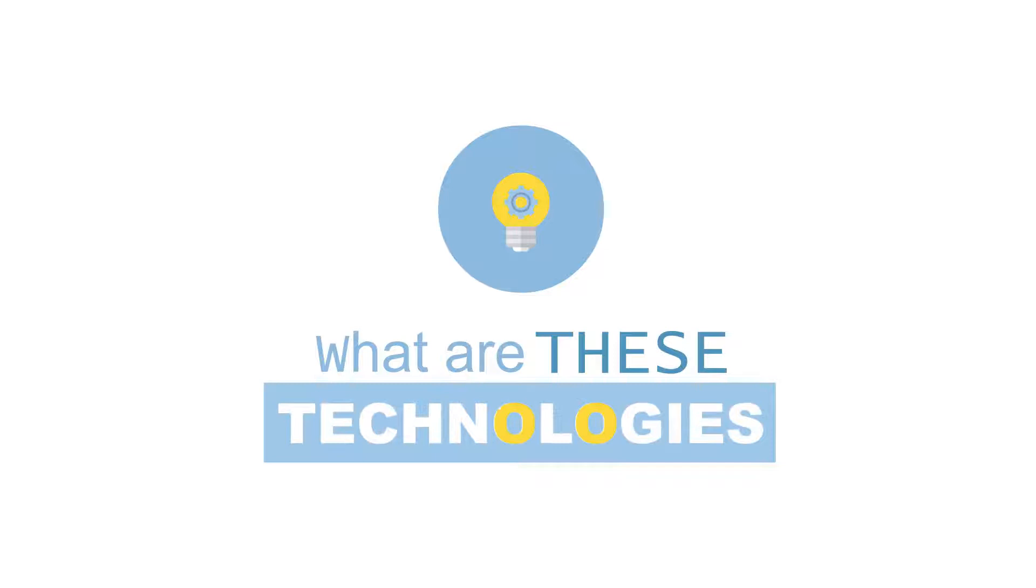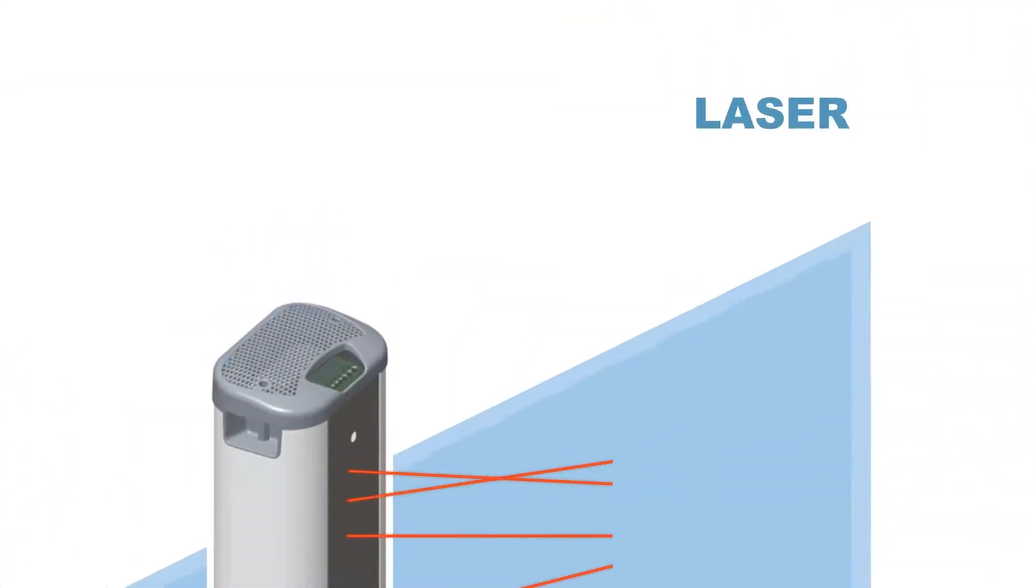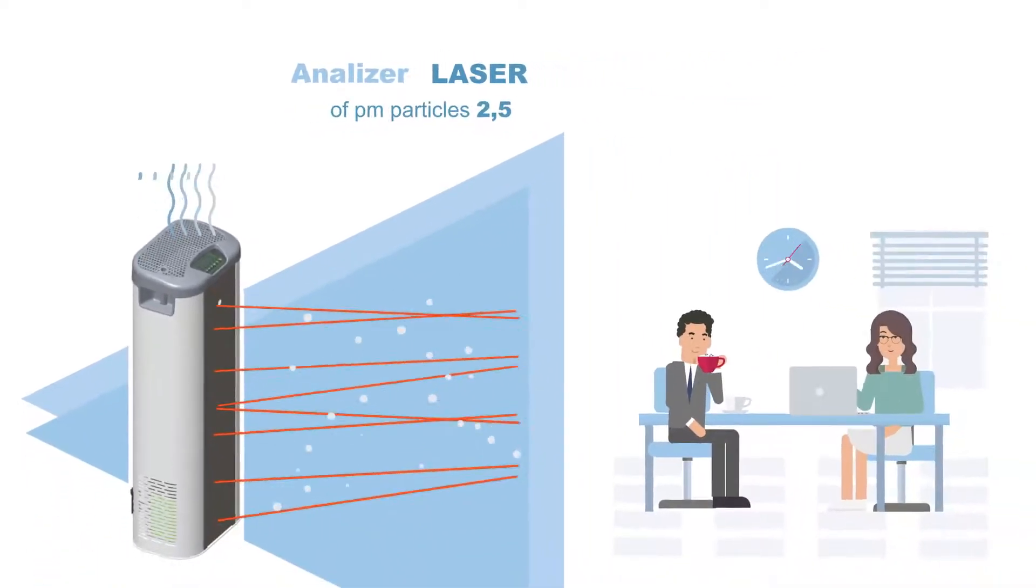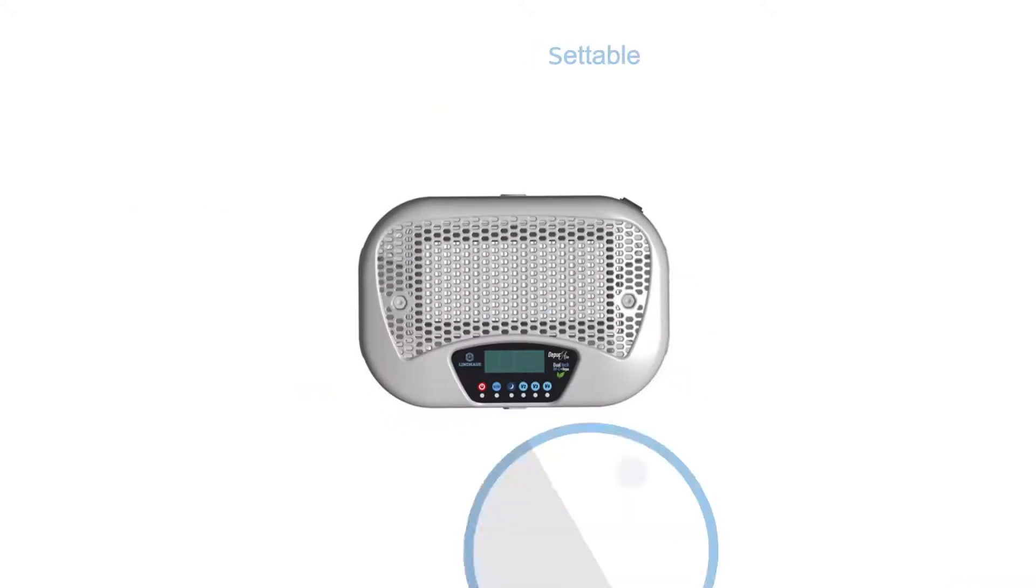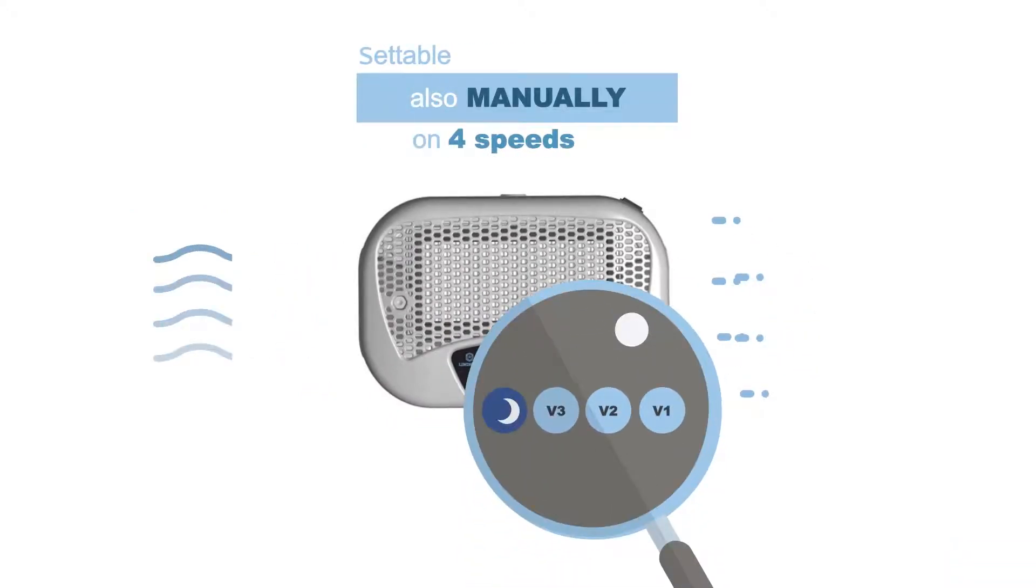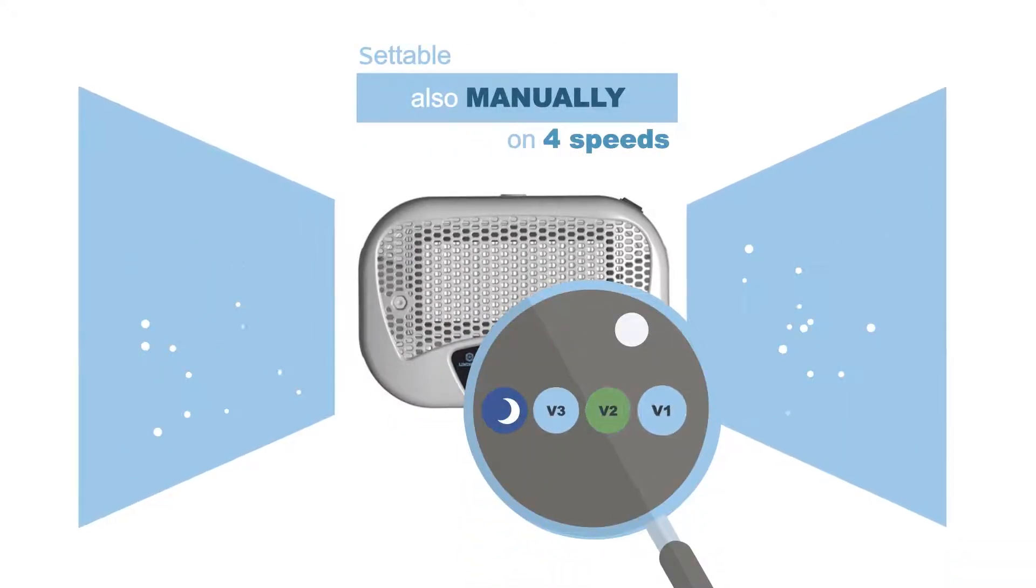What are these technologies and how do they work? First of all, the sophisticated laser analyzer measures the amount of microdust in the environment. Then DepuAir automatically sets the most suitable speed to purify the air in the shortest time.